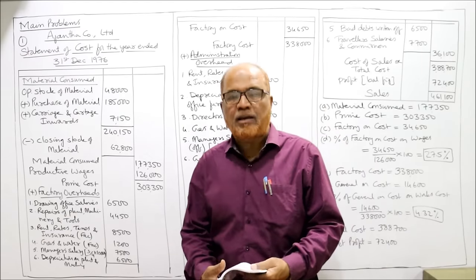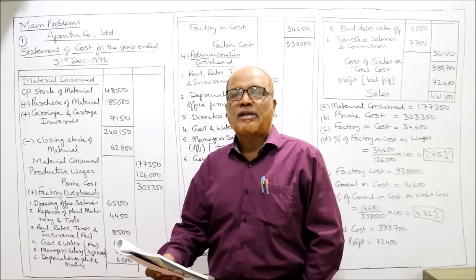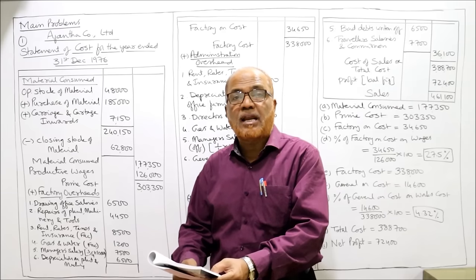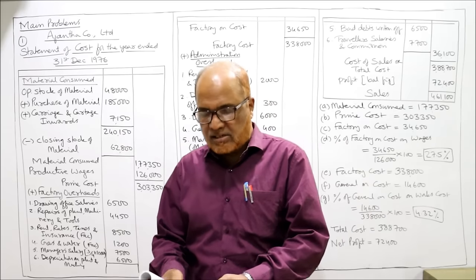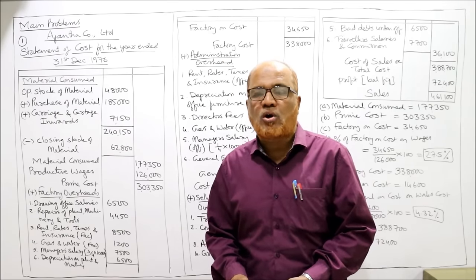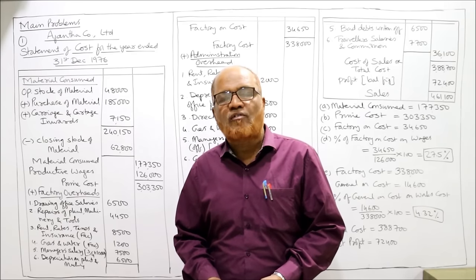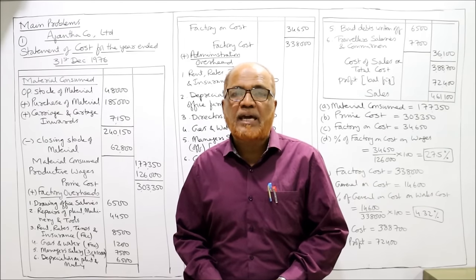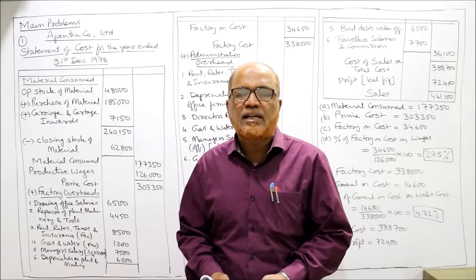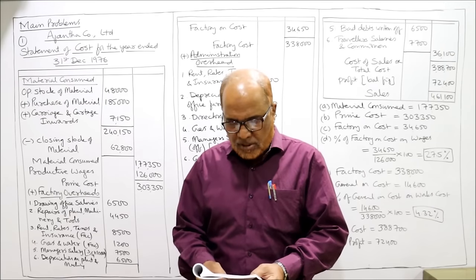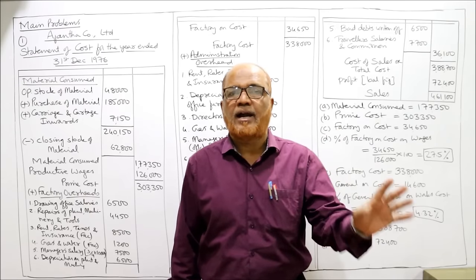Now I'm starting the first main problem. The accounts of Ajanta Company Limited for the year ended 31st December 1976 show the following data. Stock of raw material on 31st December 1976 (closing stock) and stock of material on 1st January 1976 (opening stock) are given. Using these, we can find material consumed: opening stock plus purchases plus carriage inwards minus closing stock. Any incidental expenditure to purchase material, like carriage inwards, will be added to purchase of raw material.